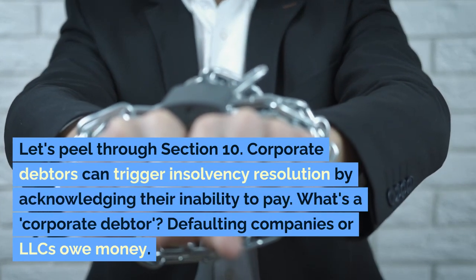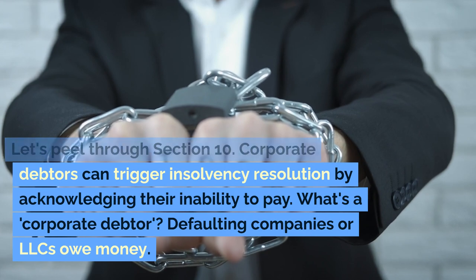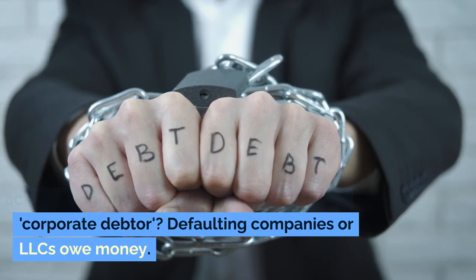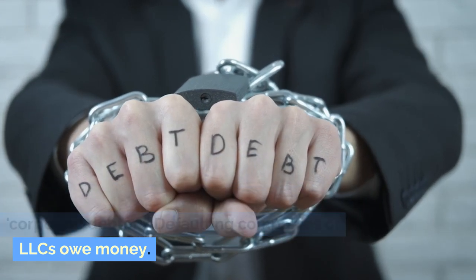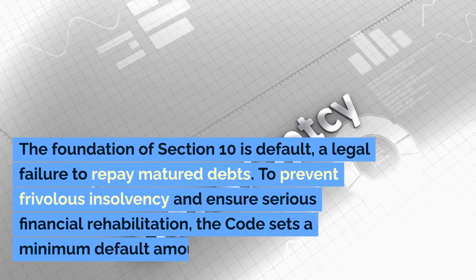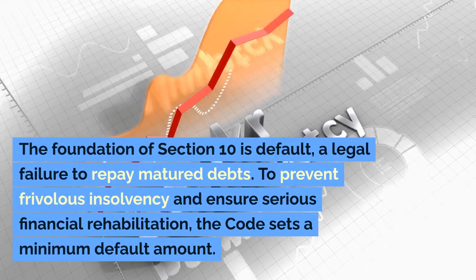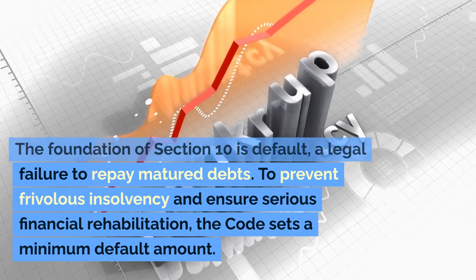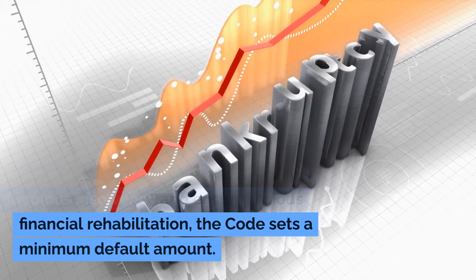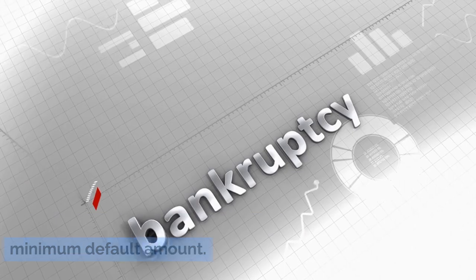Corporate debtors can trigger insolvency resolution by acknowledging their inability to pay. A corporate debtor refers to defaulting companies or LLCs that owe money. The foundation of Section 10 is default — a legal failure to repay mature debts. To prevent frivolous insolvency and ensure serious financial rehabilitation, the code sets a minimum default amount.